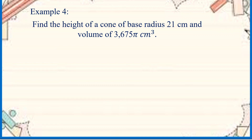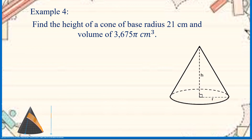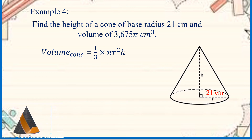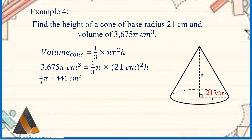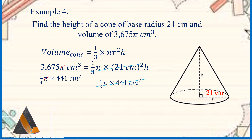Example number 4, the last example: Find the height of a cone of base radius 21 cm and volume of 3,675 pi cubic centimeters. Using the volume formula, 3675 pi cubic centimeters is equal to 1 over 3 times pi times 21 cm squared times H. Since 21 squared is 441, we divide both sides by 1 over 3 times pi times 441 square centimeters, cancelling pi. Simplifying, H is equal to 25 centimeters.